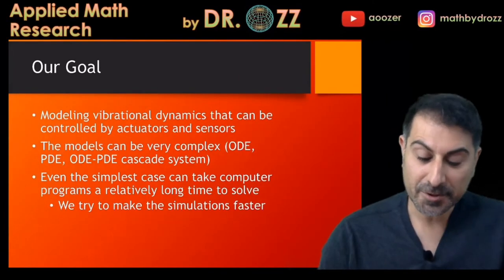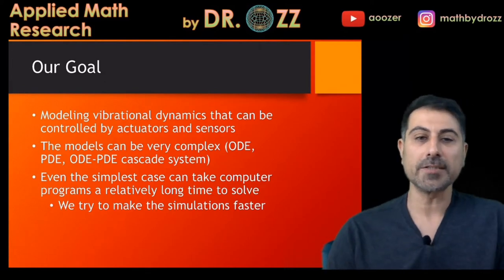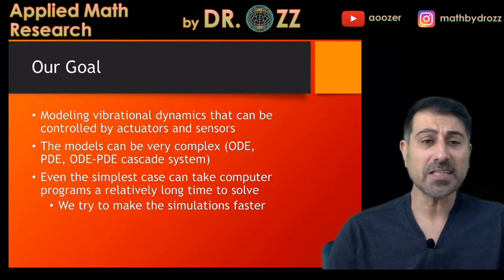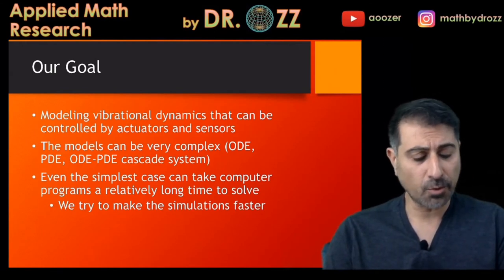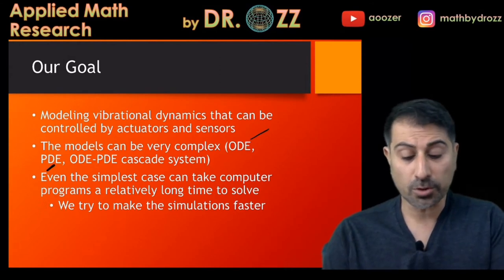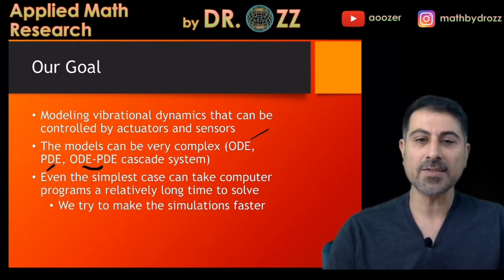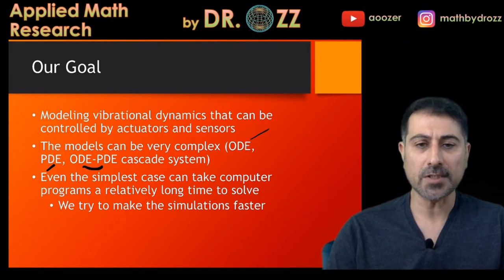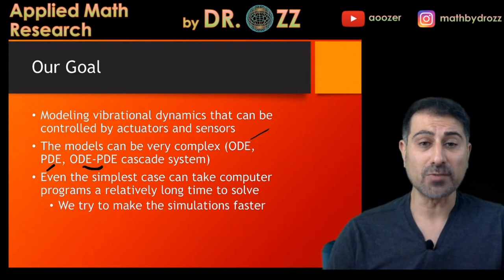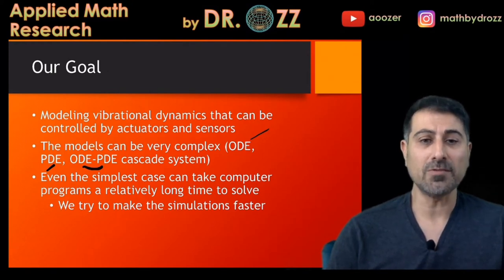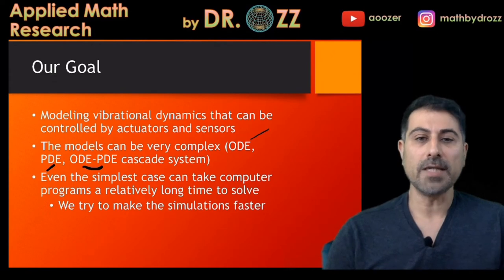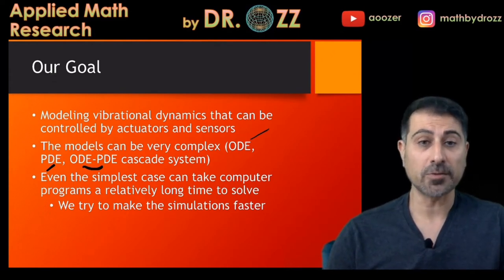The major goal in the funded research is to model vibrational dynamics that can be controlled by actuators and sensors. And in fact, the models can be very complex. They could be like ordinary differential equations or partial differential equations or sort of like a cascade system where you have ODE and PDE coupling. And in fact, even the simplest case can take computer programs a relatively long time to solve. And our goal, especially with you, is to make the simulations way faster than what they are currently.